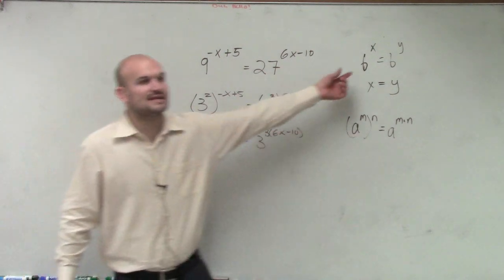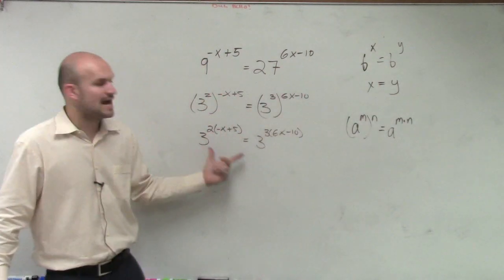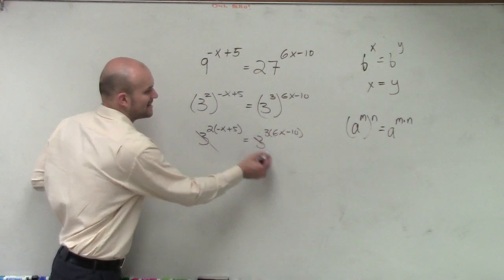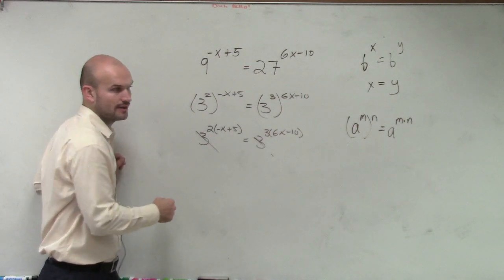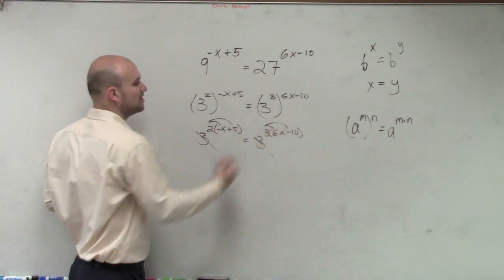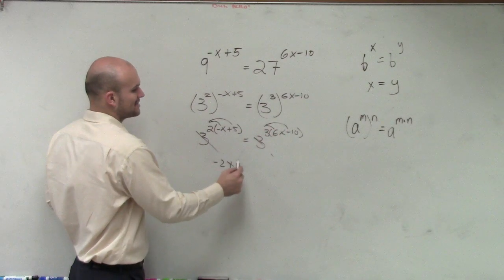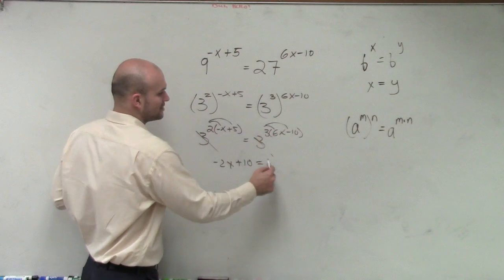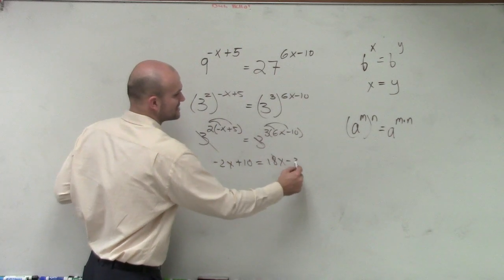You guys see how you're multiplying those? But remember now, since I have the same bases, I now know that I don't need to include my bases. I can say the exponents are equal to each other. So now, let's apply distributive property and multiply this out. Negative 2x plus 10 equals 18x minus 30.